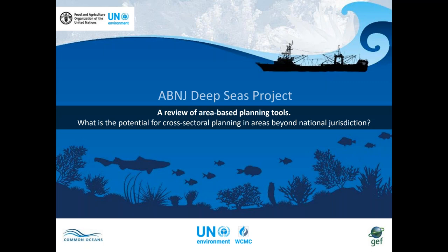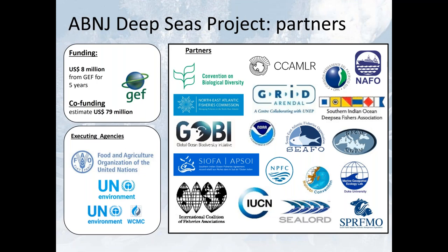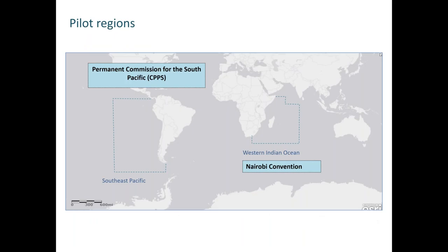FAO and UNEP-WCMC are working in partnership with many regional fisheries bodies, as well as governments and academics. The project has activities involving two pilot regions. In the Southeast Pacific we work with the Permanent Commission for the South Pacific, and in the Western Indian Ocean we're working with the Nairobi Convention.